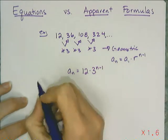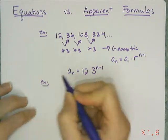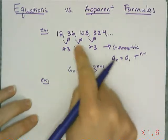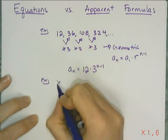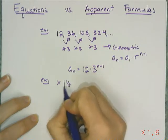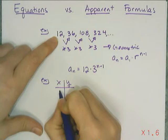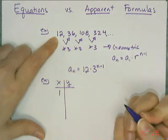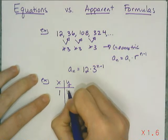Now I can change the context of this exact same sequence. Instead of writing it in sequence format, I can write it instead as a table with x and y. So the first term, I'm not going to think of it as a first term, but I'm going to think of it as x equals 1, and then y is 12.